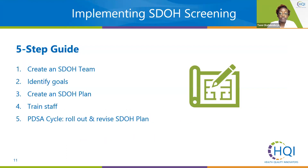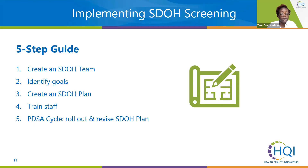Now we're going to walk through how to implement the process of social determinants of health screening, covering five main steps: creating an SDOH team, then identifying goals, creating a plan, thinking about key considerations and workflow planning, training staff, and finally using the PDSA cycle to roll out and revise the plan as necessary.